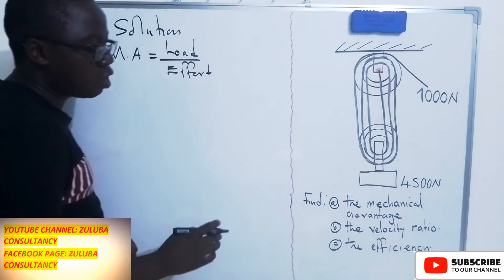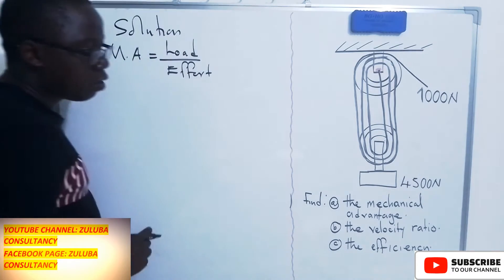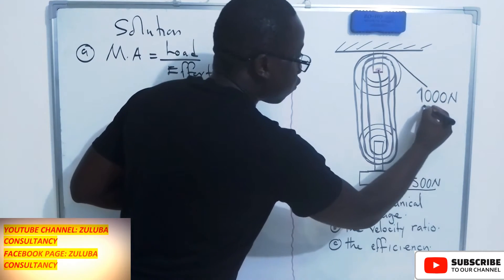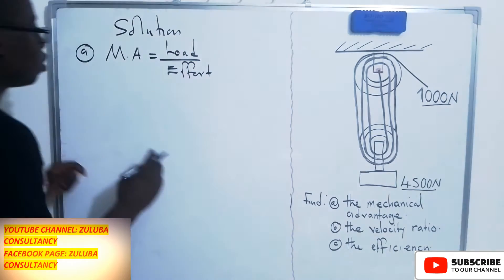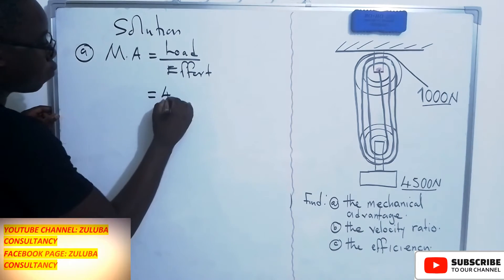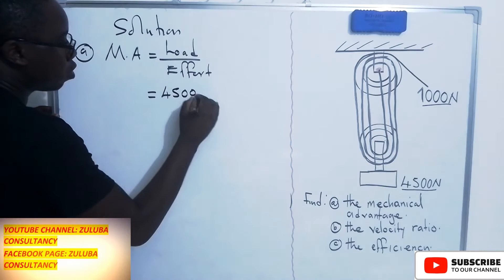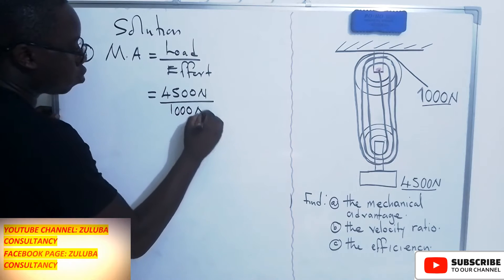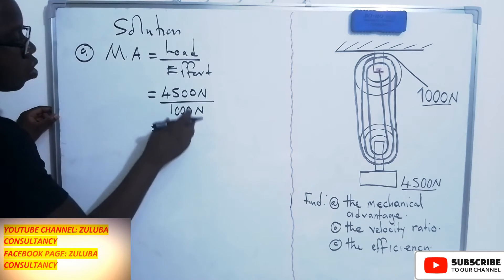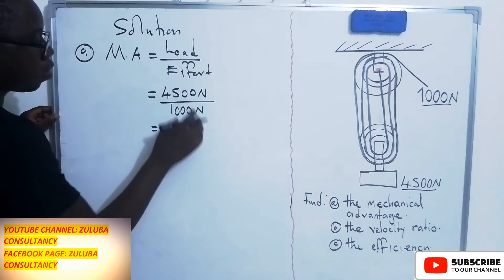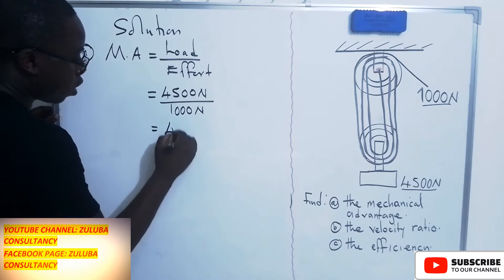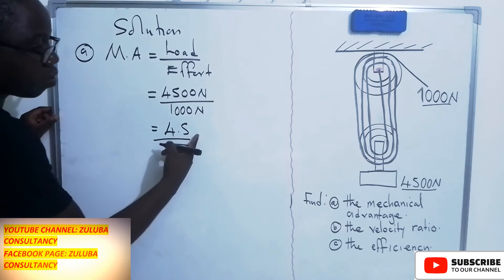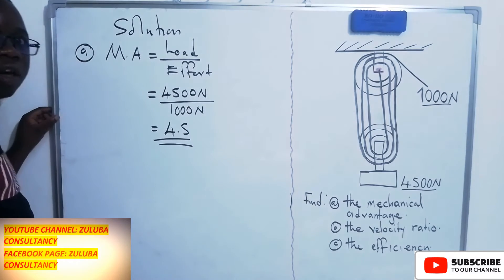We need to get the information from the question. From the question, the load is 4,500 newtons and the effort is 1,000 newtons. So we divide 4,500 by 1,000 and we get 4.5 as the mechanical advantage. Mechanical advantage has no units because it is a ratio.